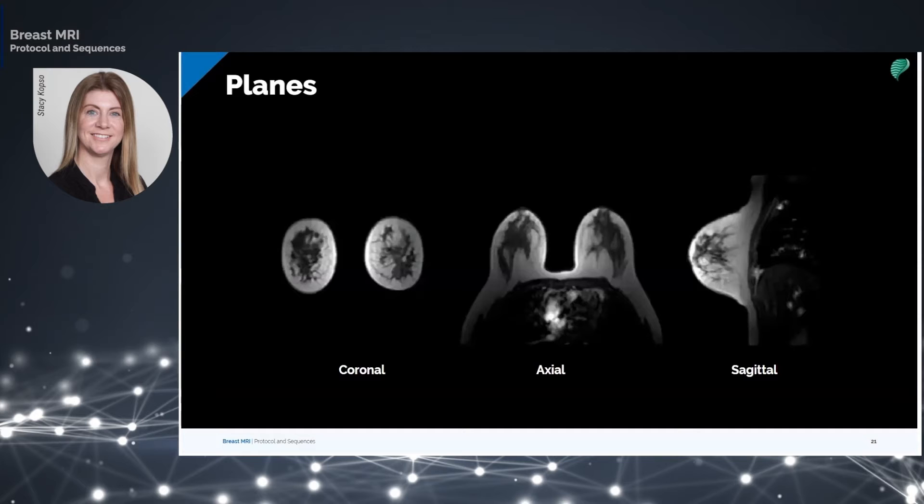Breast MRI consists of different sequences on three planes: sagittal, coronal, and axial.